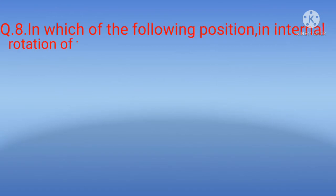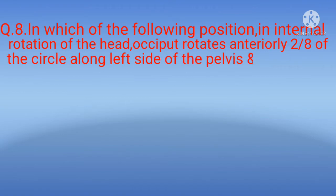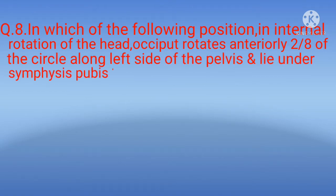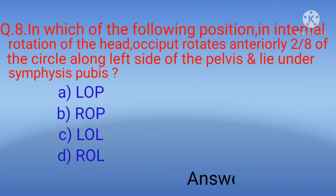Question 8: In which of the following positions does internal rotation of the head occur where the occiput rotates anteriorly two-eighths of the circle along the left side of the pelvis and lies under the symphysis pubis? Options: A) LOP, B) ROP, C) LOL, D) ROL. The correct option is C) LOL.